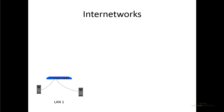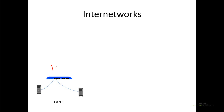Now when we talk about inter-networks, we have a separate address that we have to use. We don't use the MAC address to send data from one network to another. We use a different address that is logically assigned to the computers called an IP address. The IP address is also assigned to each one of our computers, and it doesn't come on our network card — it just gets assigned to our computers. Different IP addresses create different networks.